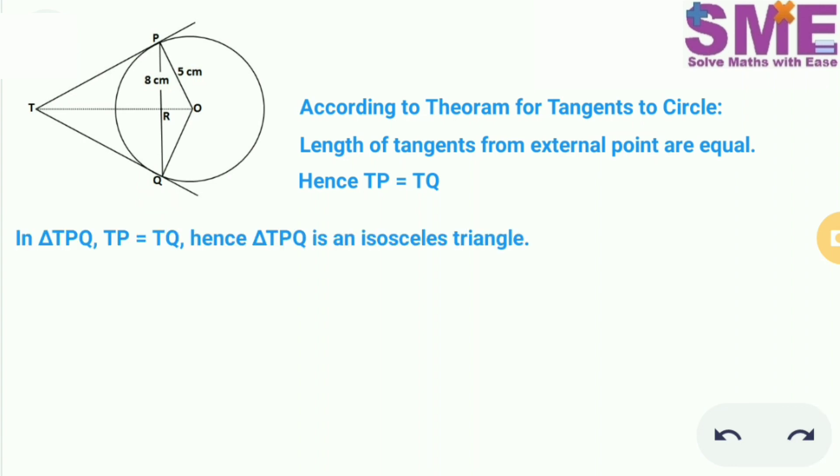Now in triangle TPQ, TP is equal to TQ, hence triangle TPQ is an isosceles triangle.